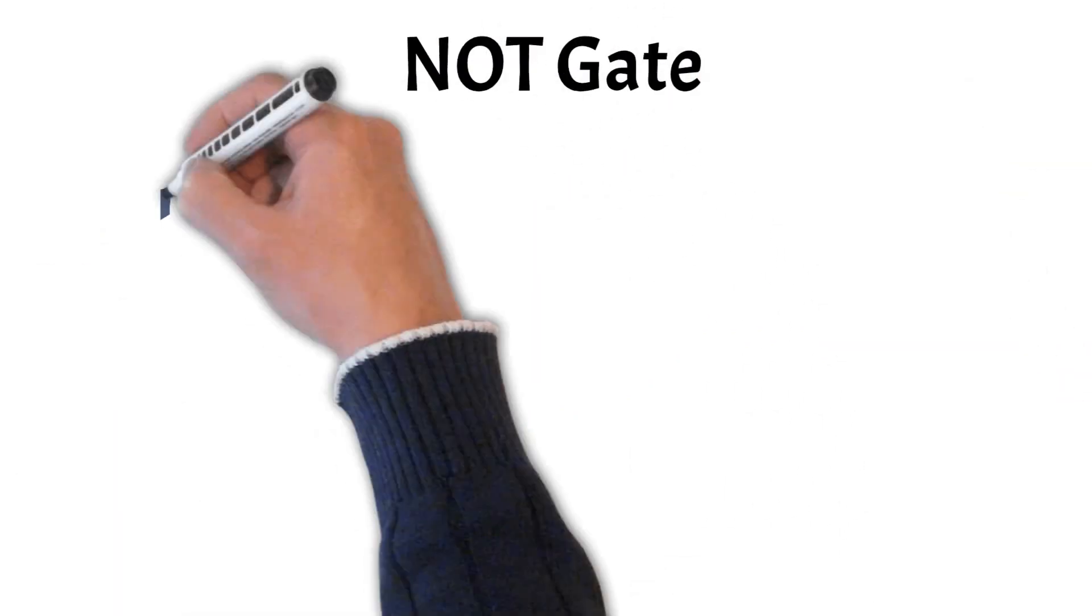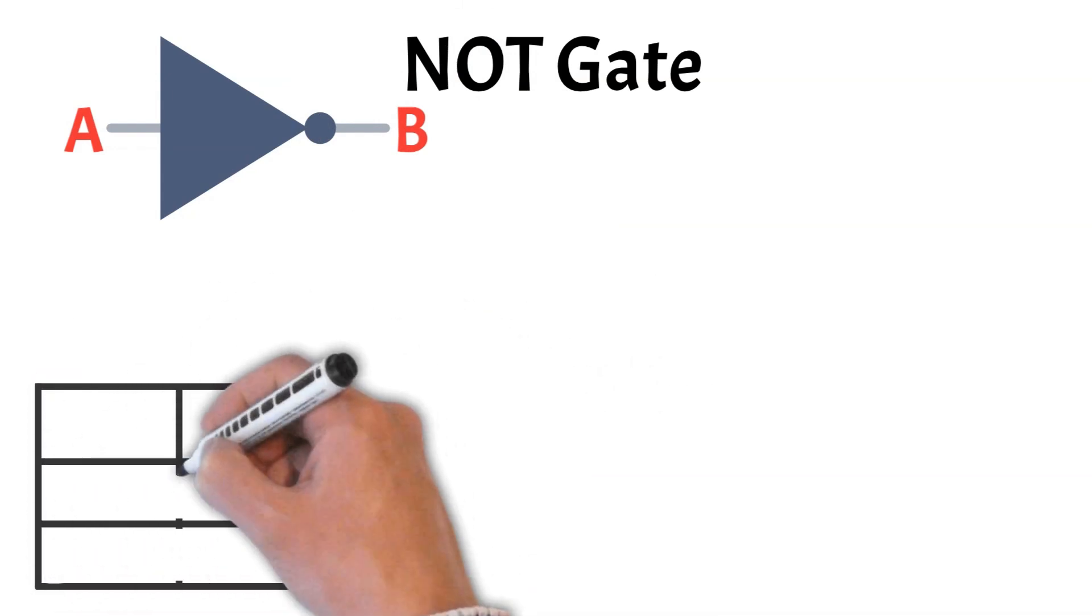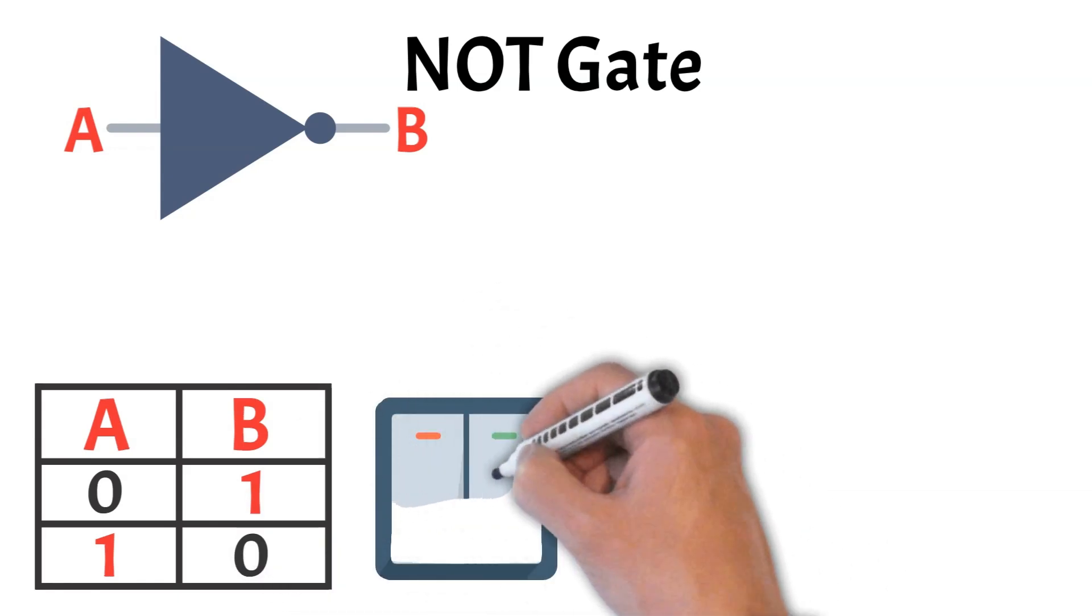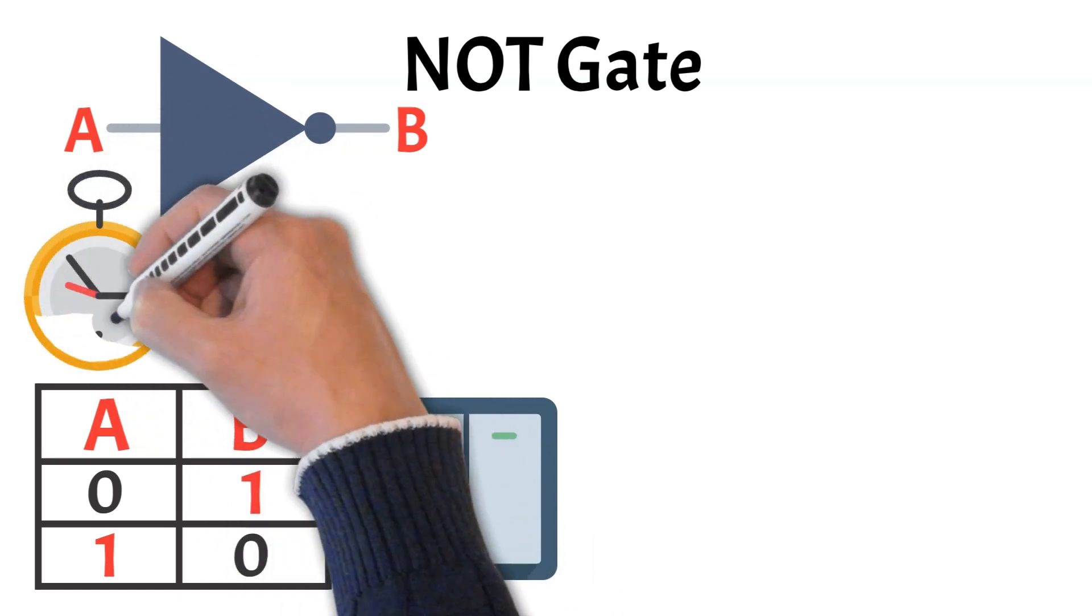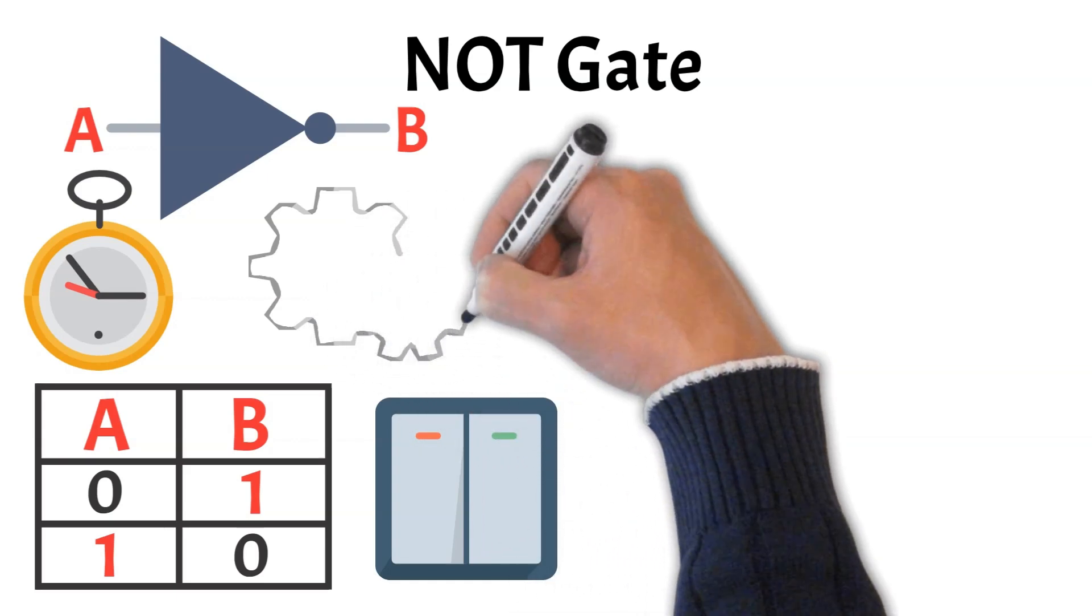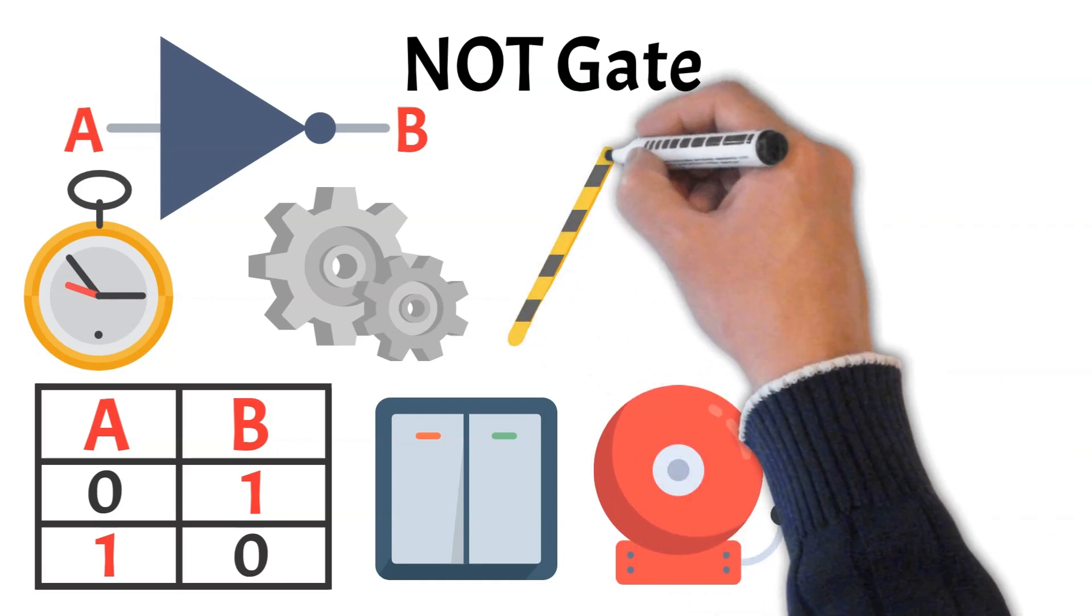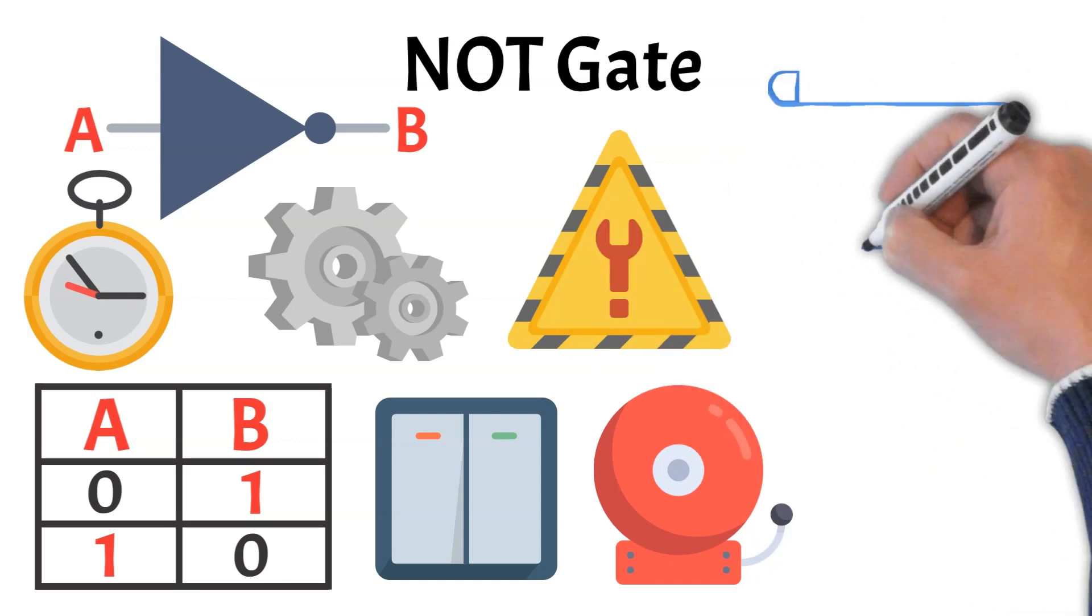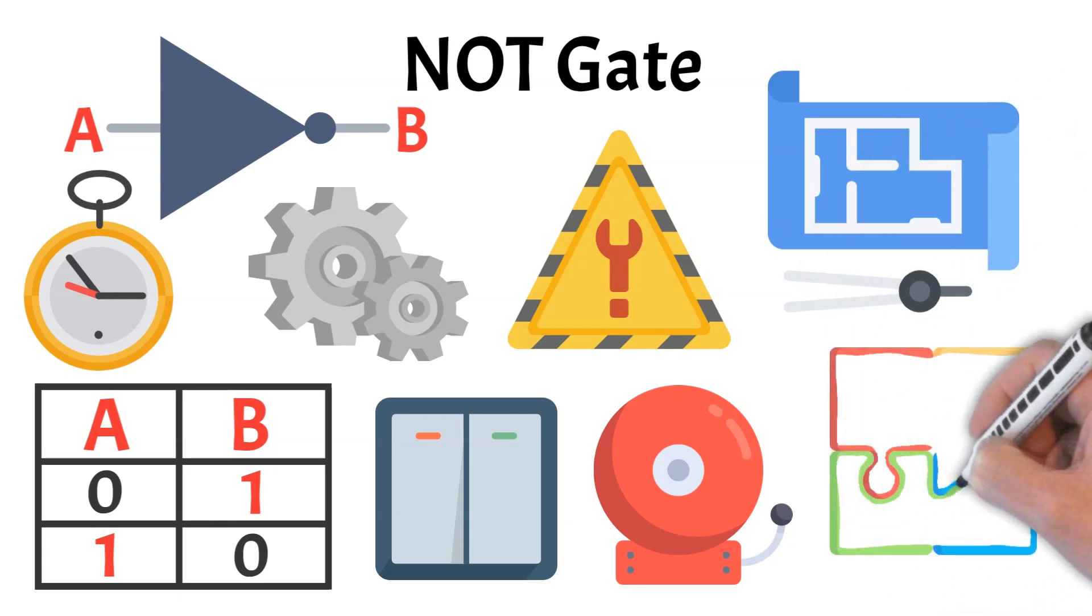Next up is the NOT gate, the simplest of all logic gates, but also one of the most important. Unlike other gates that combine multiple inputs, the NOT gate works with just one. Its job is to invert the input. If the input is one, the output is zero and vice versa. This makes it incredibly useful in situations where a system needs to respond when something doesn't happen. For example, a NOT gate could be used to sound an alert only when a safety switch is not engaged, ensuring attention when something is wrong. It's also frequently used in more complex circuits to reverse signals, control flows, or build more advanced logic like NAND and NOR gates, which we'll cover later in the video.